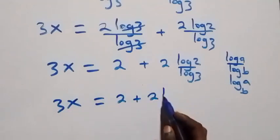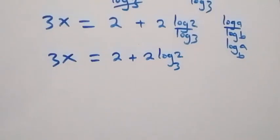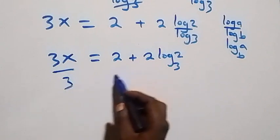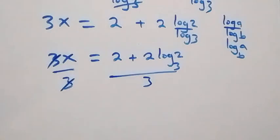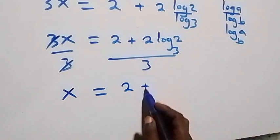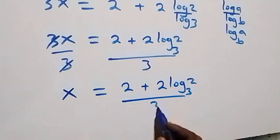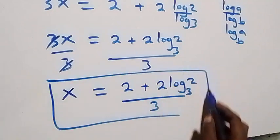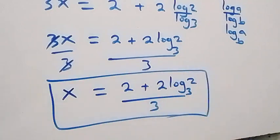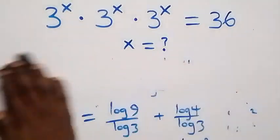We then divide both sides by 3. Dividing here by 3 and also this side by 3 — the 3s cancel — and we have x equals 2 plus 2 log base 3 of 2, all over 3. So the value of x in this problem is (2 + 2 log₃2) / 3.